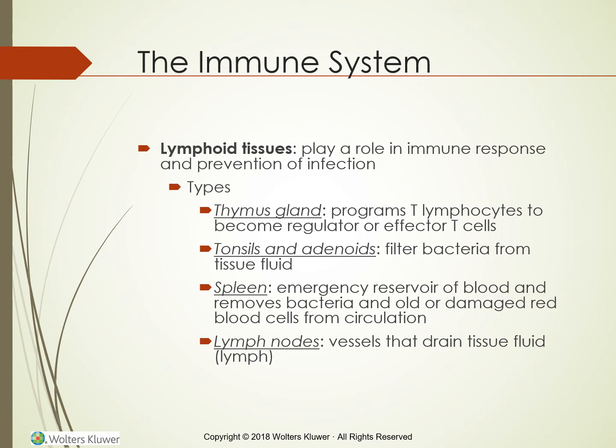Lymphoid tissues such as the thymus gland, tonsils, adenoids, spleen, and lymph nodes play a role in the immune response and prevention of infection. Lymphoid tissue is also found on the surface of the mucous membranes of the intestine, on alveolar membranes in the lungs, and in the lining of the sinuses of the liver. Bone marrow is sometimes included as a component of the immune system because it produces undifferentiated stem cells.